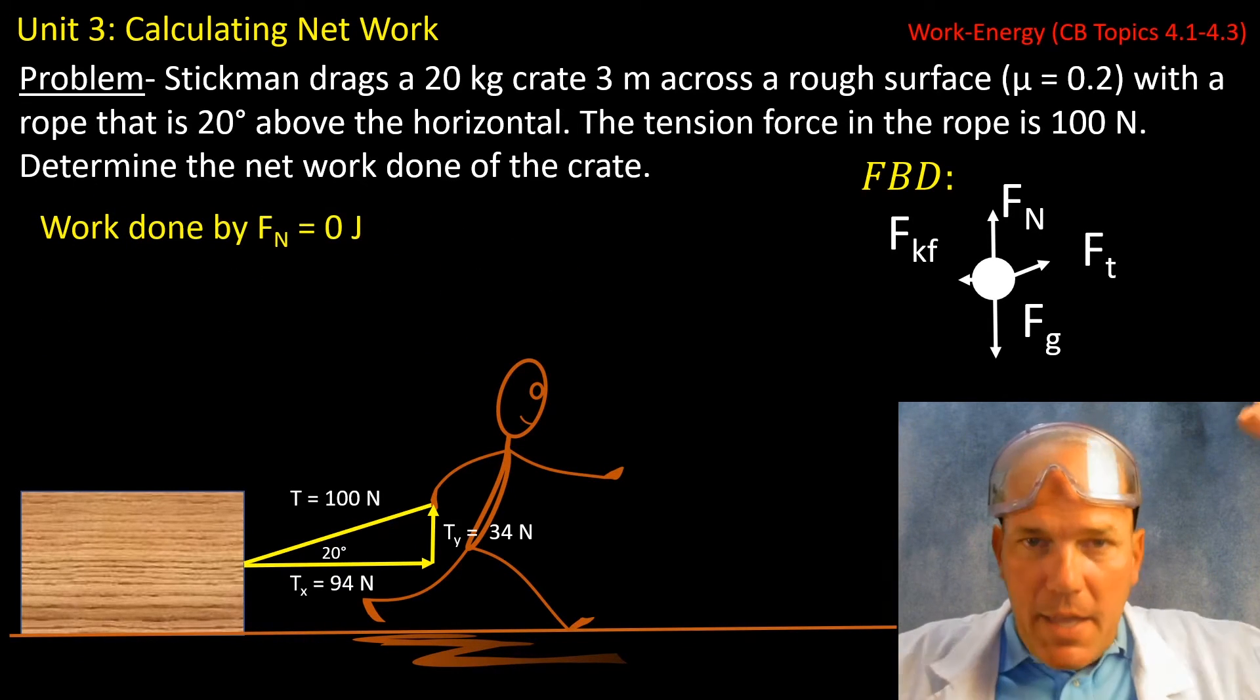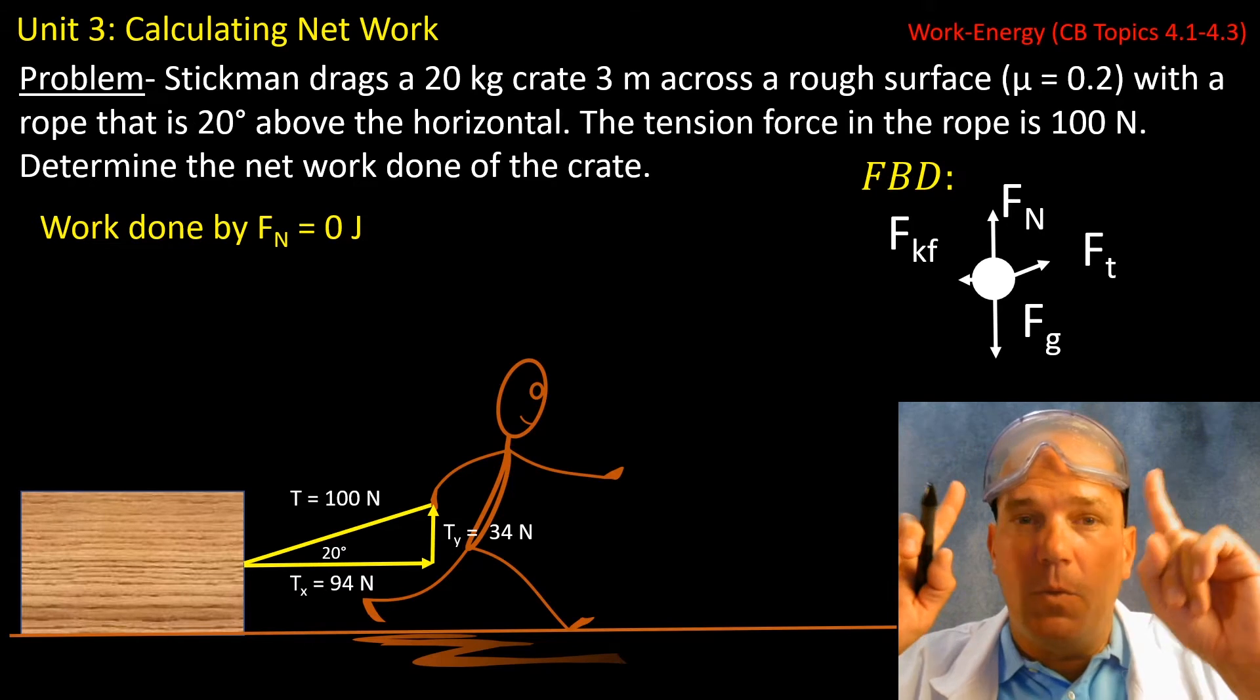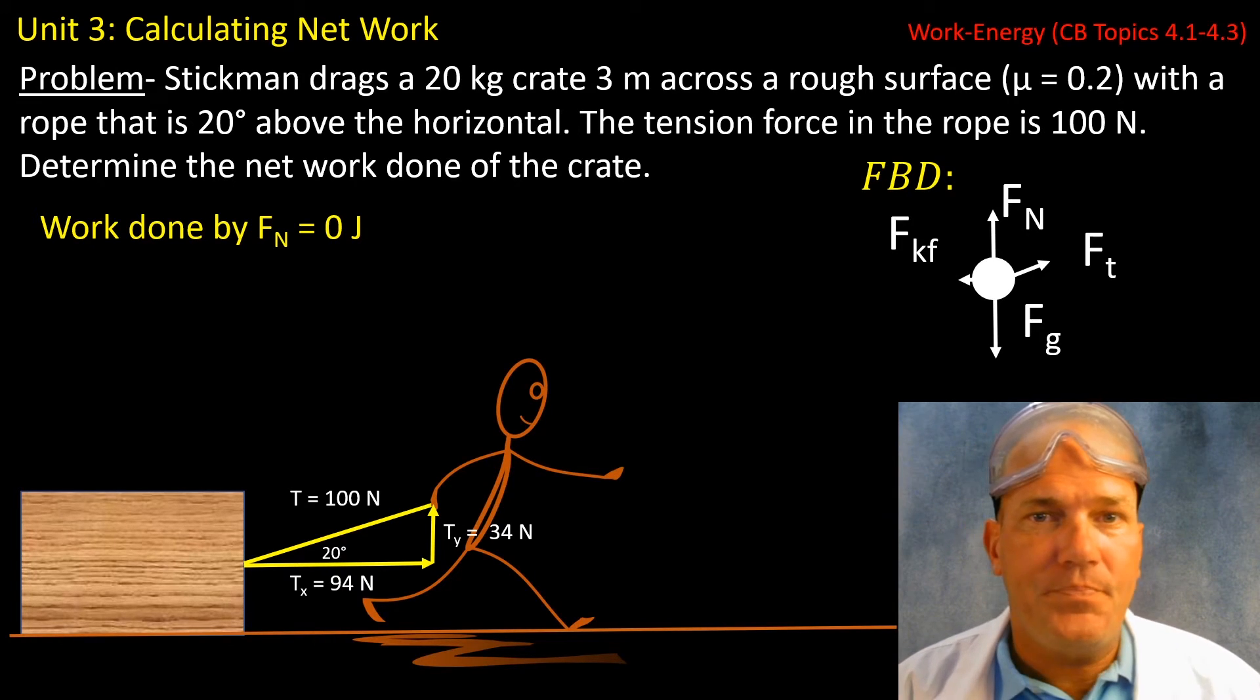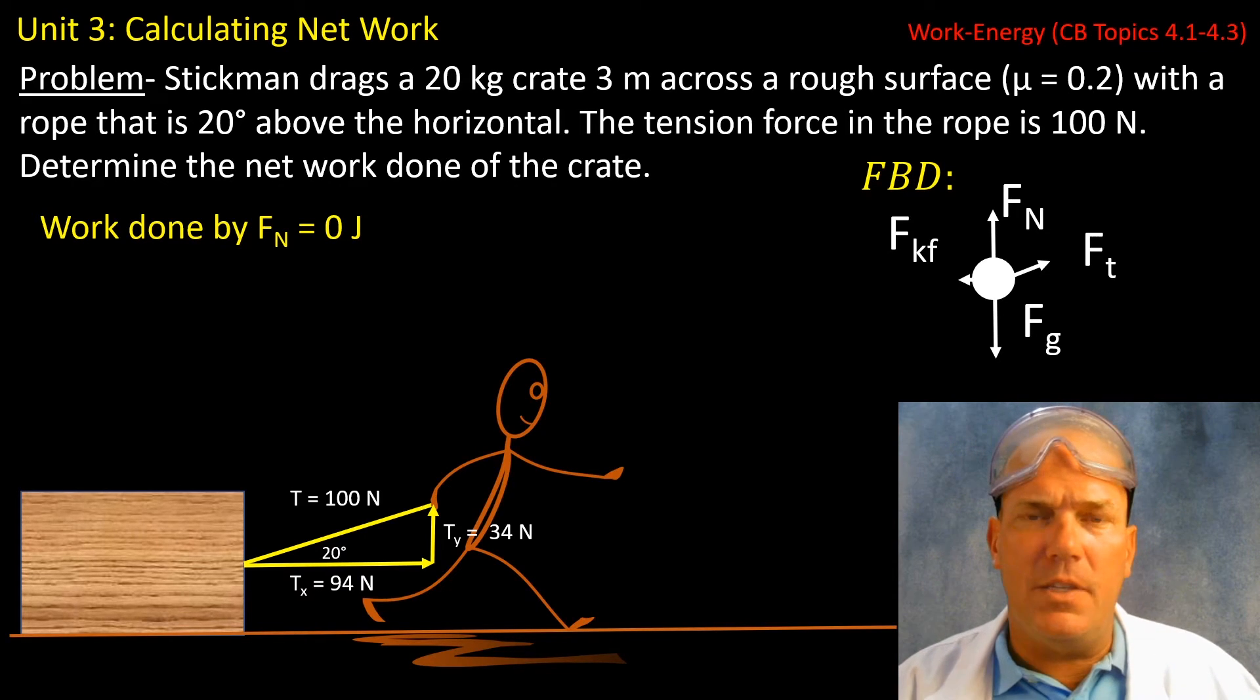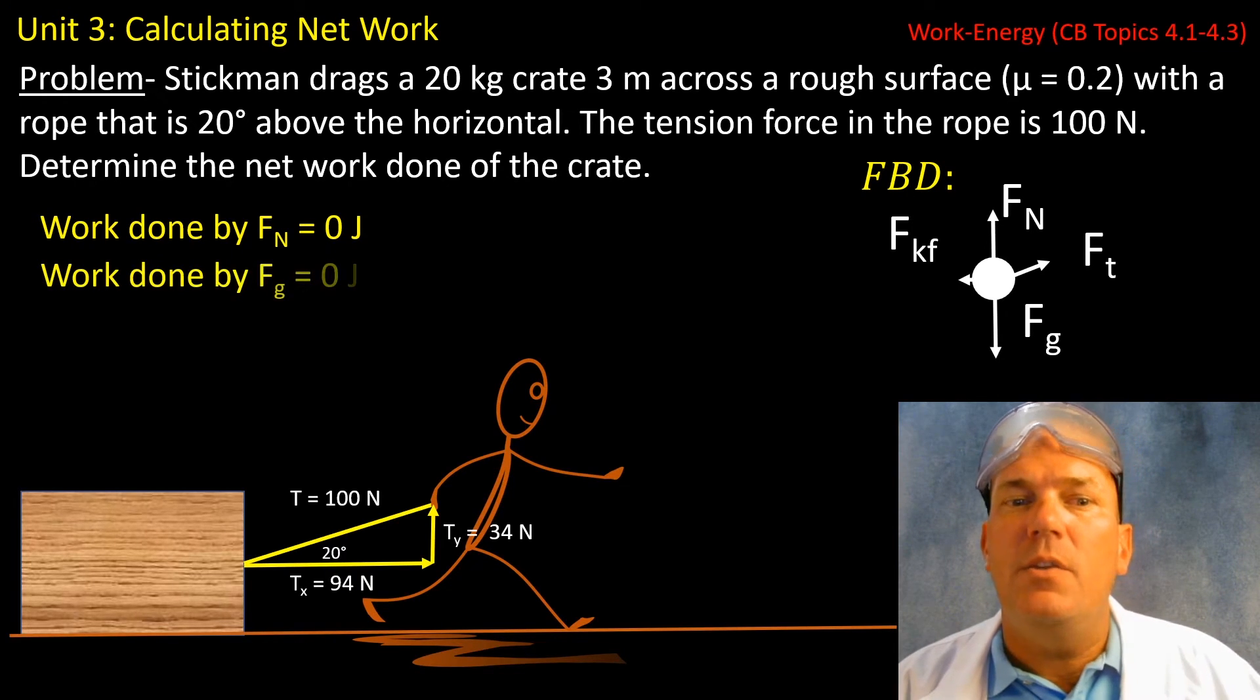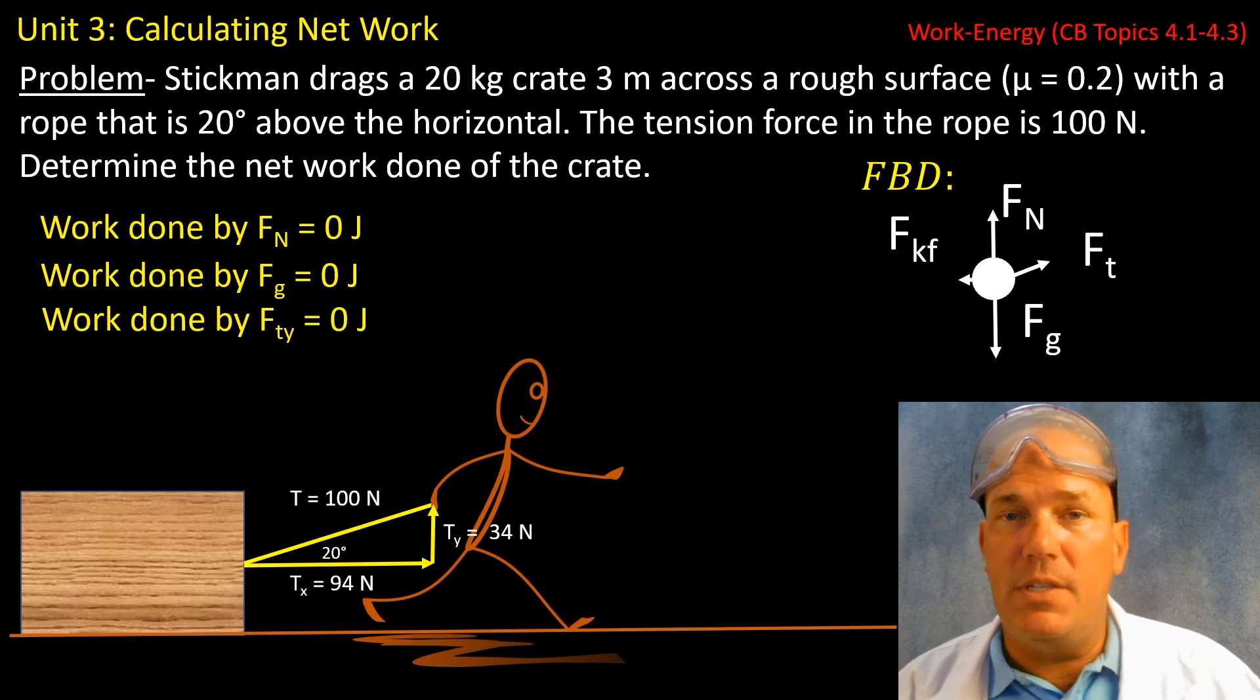So in summary, let's revisit if work is being done by these various forces in our free body diagram. Force normal is doing zero work. Why? Object's displacement is to the right, force normal acts vertically. That's 90 degrees. Cosine of 90 degrees equals zero. Likewise, work done by the force of gravity is zero joules because it is at a 90 degree angle to the displacement vector.